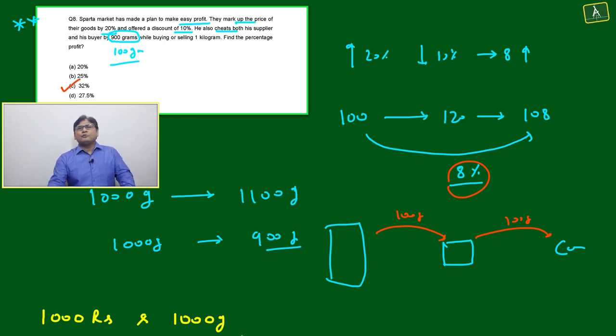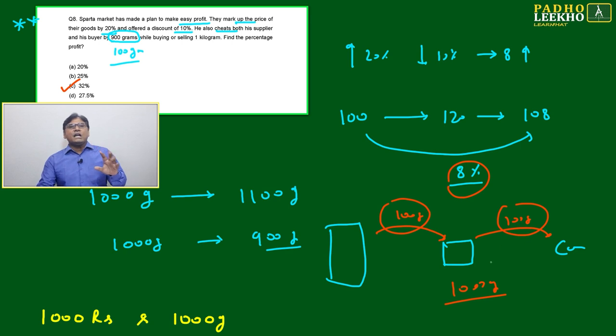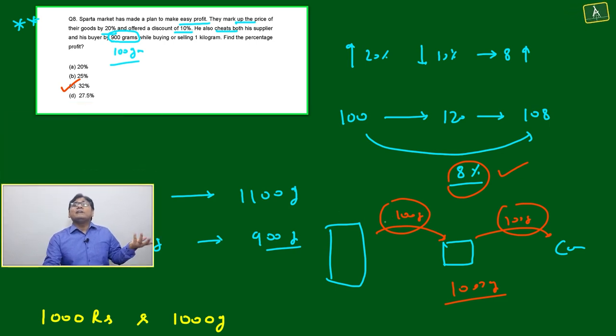It will be more than 28%. This is just common sense, just observation of data. Here 100 grams profit, here 100 grams profit out of 1000 grams - rough calculation gives 200 out of 1000, which is 20%, plus 8% means he's making at least 28% profit.